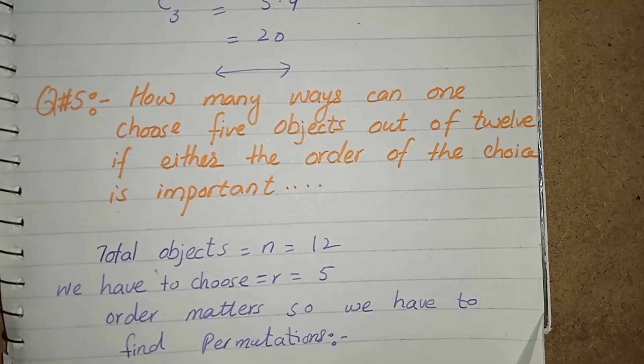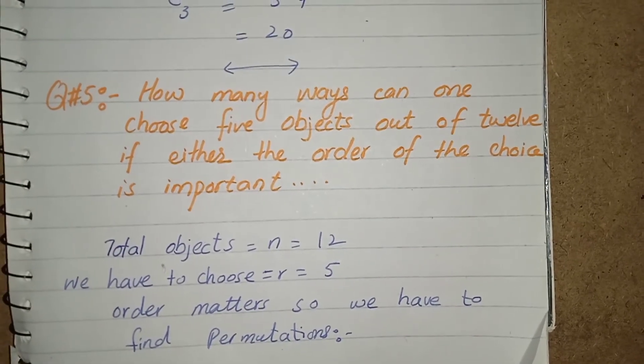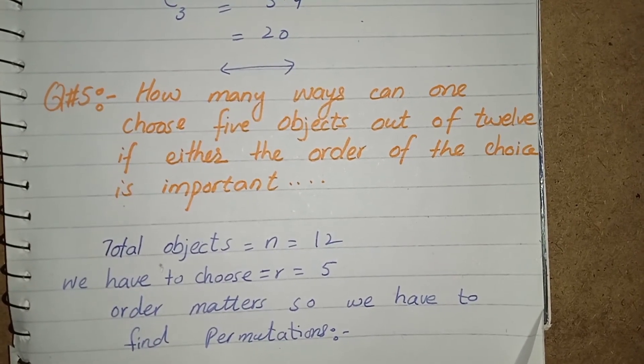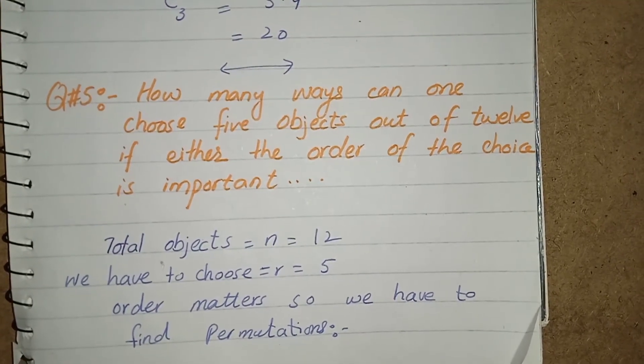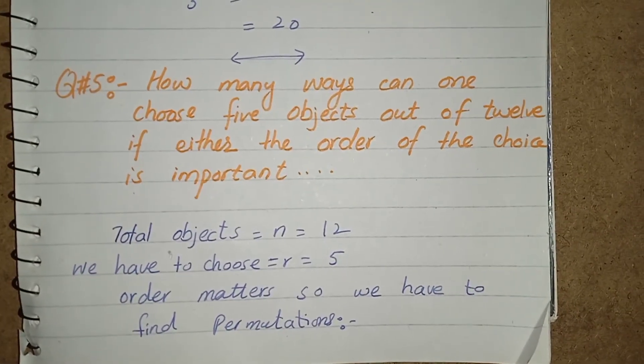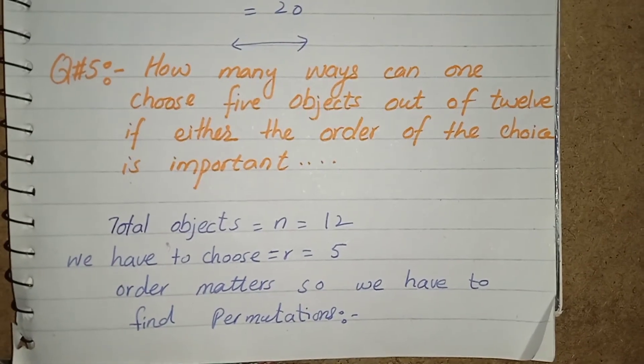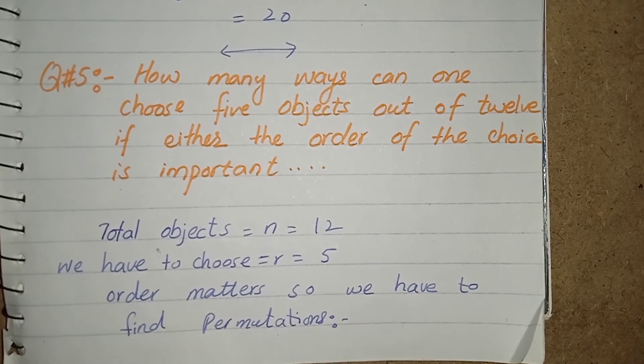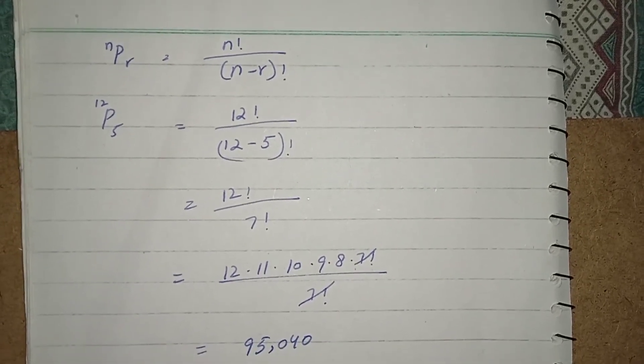Question number 5, how many ways one can choose 5 objects out of 12, mean the value of the r would be 5 and the value of n would be 12 because the total objects are 12. If either the order of choice is important and the next case would be not important. As let at first find the ways when the order is important. In this case, as they told us the order is important, so we will go towards the permutation and in permutation by applying its formula, I get the number of ways when the order is important.